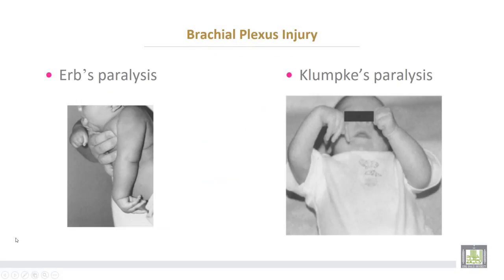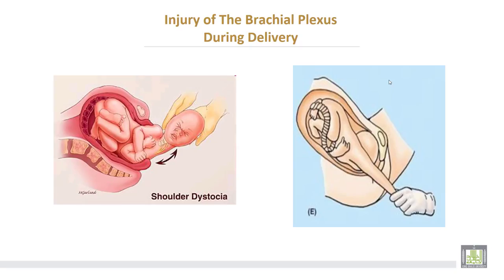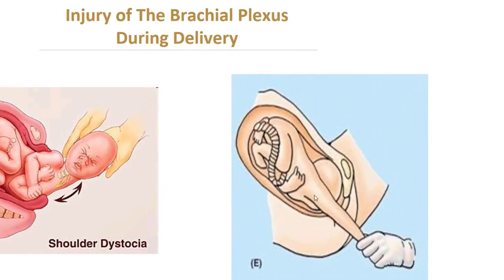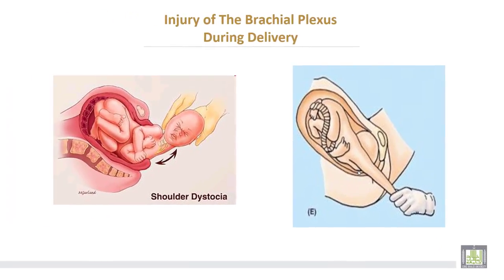This shows Erb's paralysis and its deformity, and this shows Klumpke's paralysis and its deformity. Erb's paralysis is due to injury of the upper trunk of the brachial plexus, while Klumpke's paralysis is injury of the lower trunk. This illustrates how the injuries happen — traction on the shoulder during delivery, and traction on the arm during delivery.